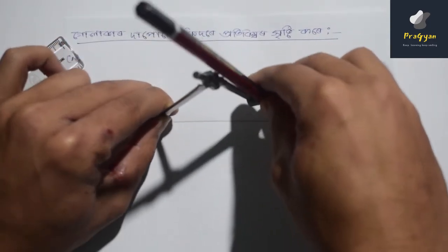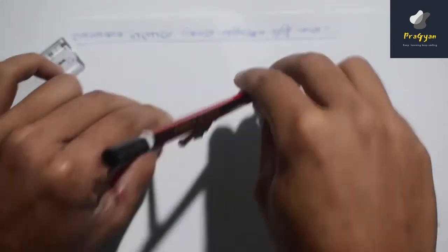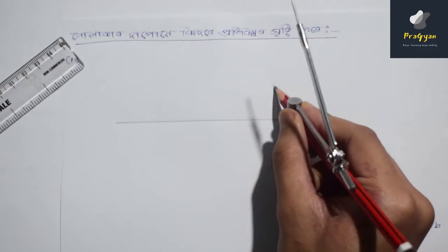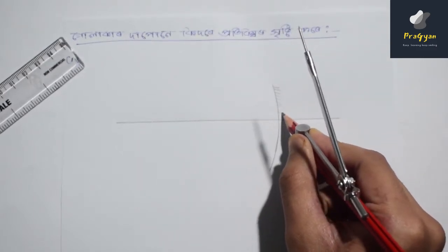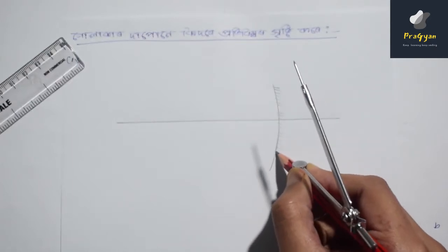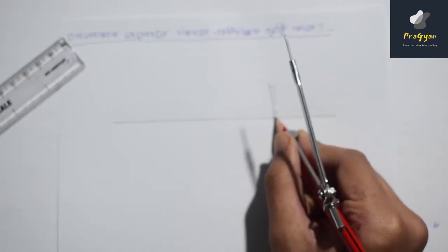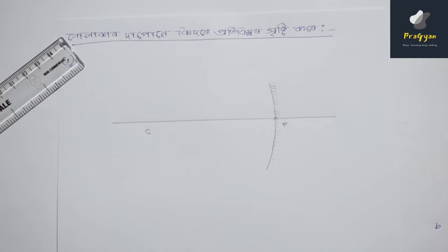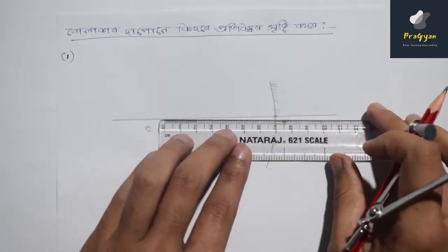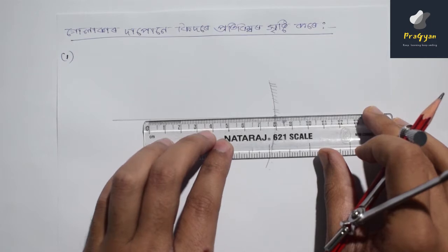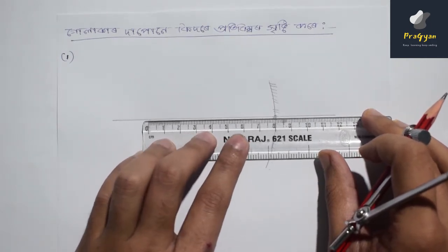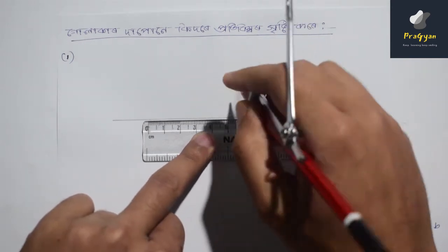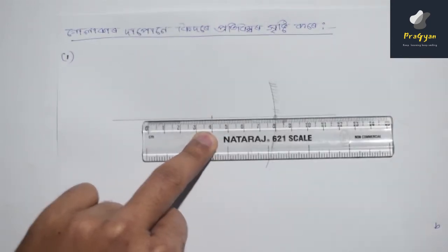If you want to see the FASBHarder, you can see the FASBHarder. This is the FASBHarder. If you want to see the FASBHarder, you can see the FASBHarder, and the FASBHarder.